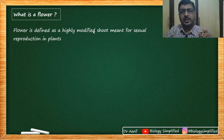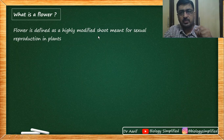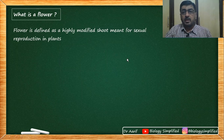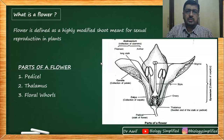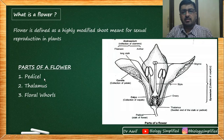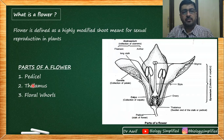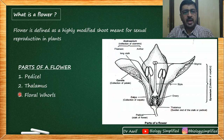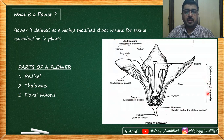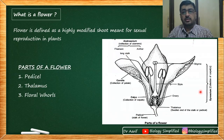To explain 'highly modified shoot,' I need a little help, so I'll move ahead and come back to this definition when we reach the structure of thalamus. The parts of a flower are: pedicel, which is the stalk of the flower; thalamus, the swollen end of the pedicel — the gray expanded part you can see here; and the floral whorls — calyx, corolla, androecium, and gynoecium.